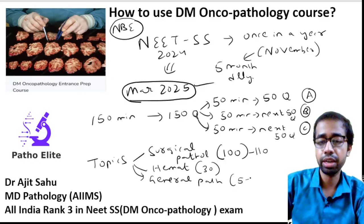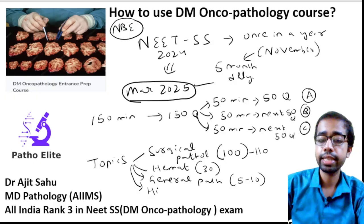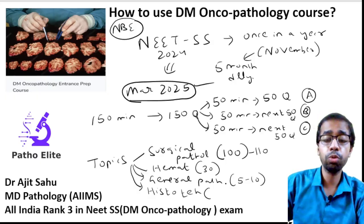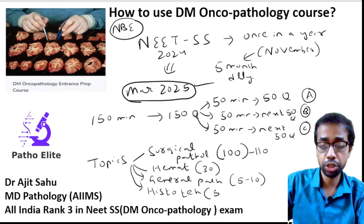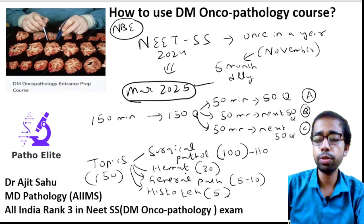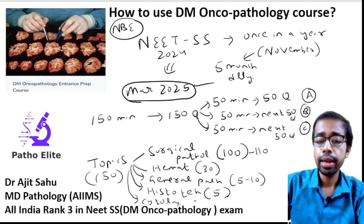General pathology questions vary - this year there were very few, around five to ten only. From histotechniques - regarding hematoxylin, electron microscopy, microtomes - you might get around five questions. Cytology also, you will get around five to ten questions, which is included within surgical pathology. All together it constitutes around 150 questions.